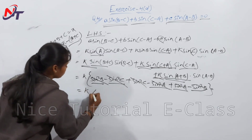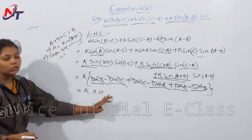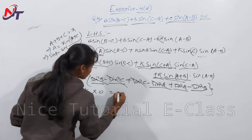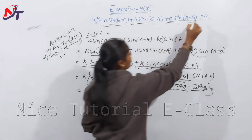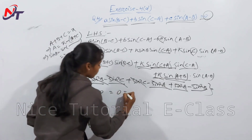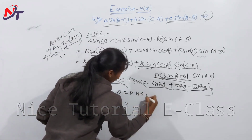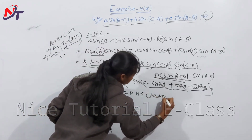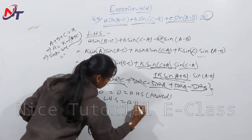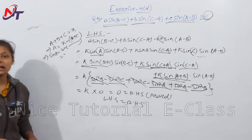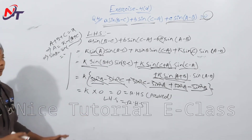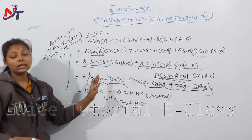k multiplied by 0 is 0. The right-hand side is also 0. Therefore LHS = RHS, and the identity is proved using the sine rule and the sin(A ± B) formula.